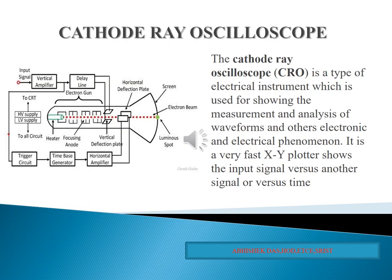Here we can see the block diagram of cathode ray oscilloscope. Cathode ray oscilloscope is also known as the CRO. It is a type of electrical or electronics instrument which is used for showing the measurement and analysis of waveforms and other electronics and electrical phenomena. Cathode ray oscilloscope is mainly a time-based instrument — that is, on the x-axis it represents time.